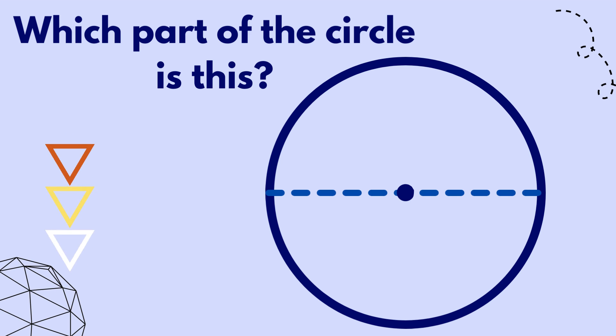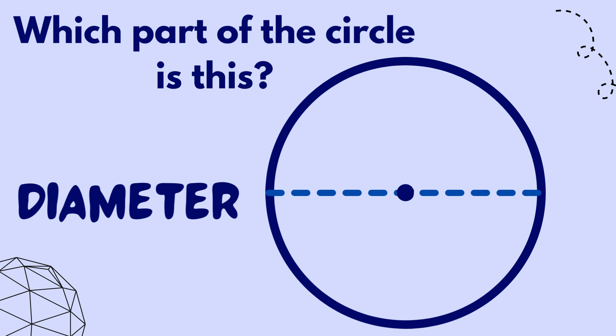Which part of the circle is this? Think about it. It's a chord that is passing through the center of the circle. Perfect. It's a diameter.